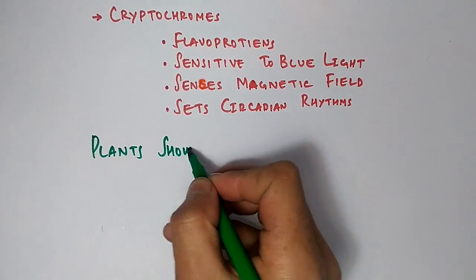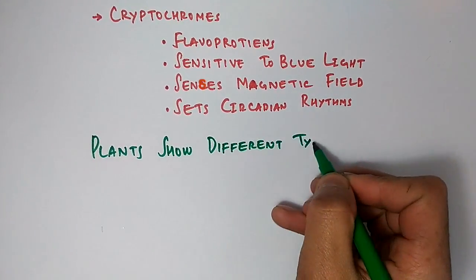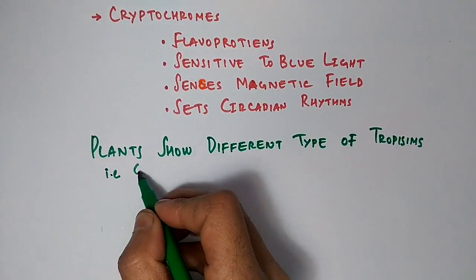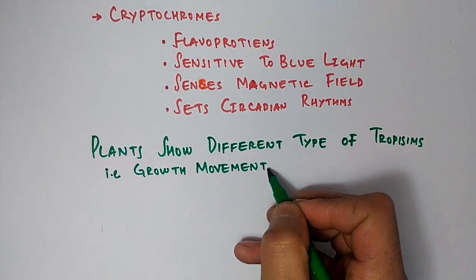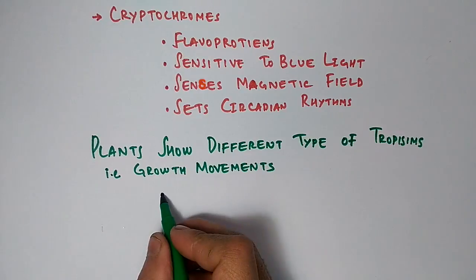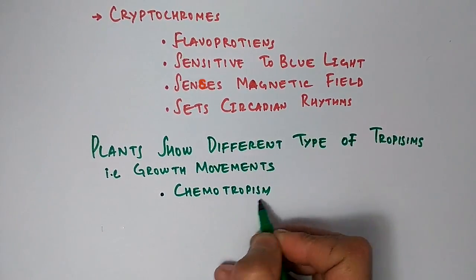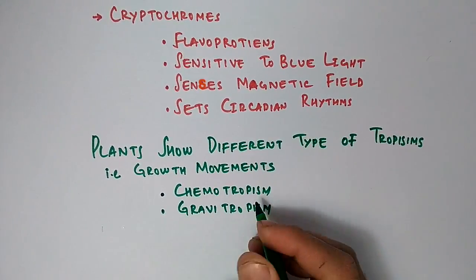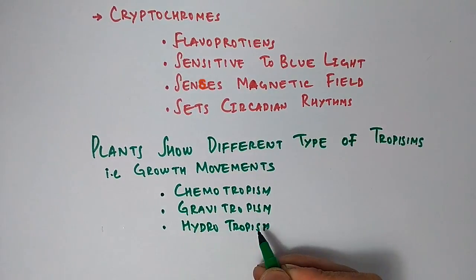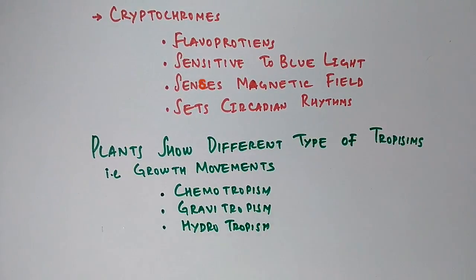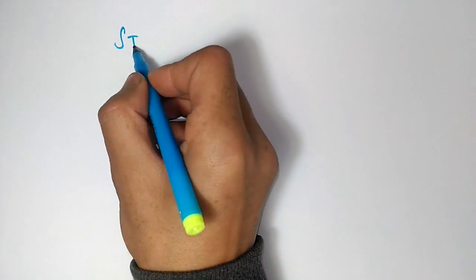Plants also show different types of tropism movements—these are growth movements, we call them directional movements of plant, because we also have non-directional movements in plants. Plants have chemotropism, gravitropism, hydrotropism—these are movements towards chemicals, gravitation, and water respectively.